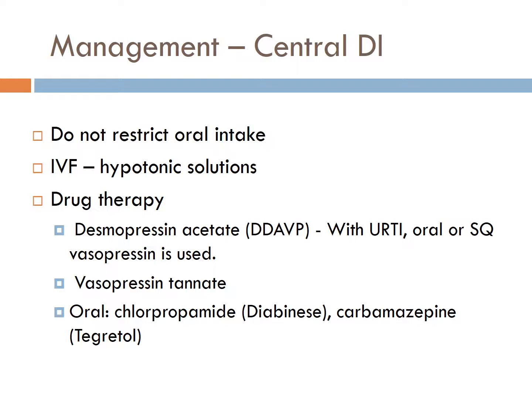For management of central DI, fluids are not restricted and are replaced both orally and by IV. In acute DI, hypotonic D5W or half-normal saline is used. The volume of IV fluids is titrated depending on urine output. Monitor blood glucose when using dextrose solutions. Desmopressin increases the action of existing ADH and may stimulate ADH production in the hypothalamus. When ADH deficiency is severe, ADH analogues like DDAVP or aqueous vasopressin are replaced in amounts sufficient to maintain water balance.